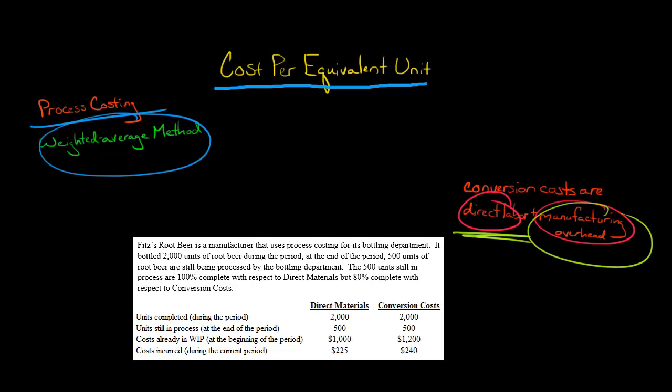I put together a little table here. I'm going to break this out by direct materials and conversion costs, because very often they will have a different cost per equivalent unit.